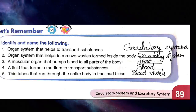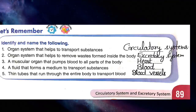Fourth one is: a fluid that forms a medium to transport substances. Fluid का meaning होता है liquid substance. कौन सा ऐसा liquid substance है जो substances को transport करता है? Blood में nutrients, oxygen, water, और other waste products होते हैं। तो the answer is blood (B-L-O-O-D).